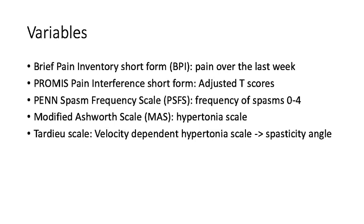We also used univariate linear regression models to determine if associations existed between these scales as well as with age. Multivariate regression models were also used to adjust for age and pain medication use. Penn Spasticity scores were also evaluated by GMFCS level using the Kruskal-Wallis test and Cuzick's nonparametric trend test to look for trend.